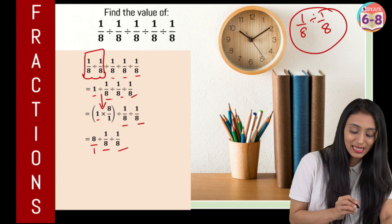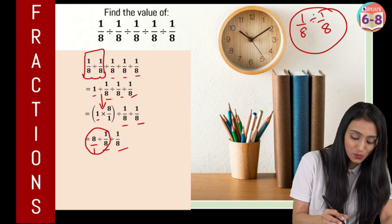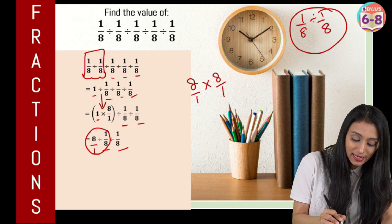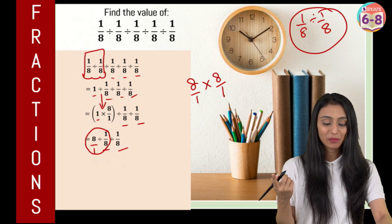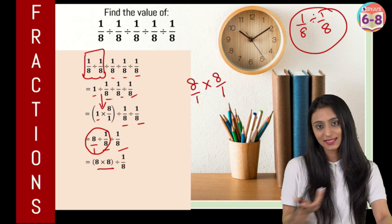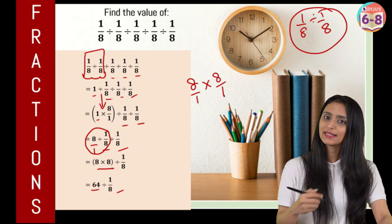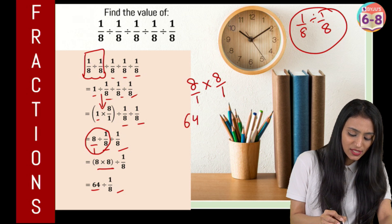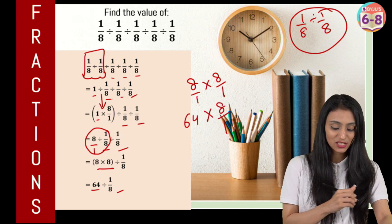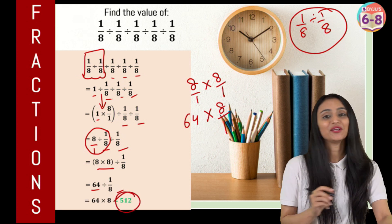Now this 8 is nothing but 8 upon 1. So similarly, I'm going to use the same thing here as well. Change this division symbol to multiplication and just flip this digit — 1/8 becomes 8/1. So 8 times 8, that's 64. Now we have 64 divided by 1/8. Same thing again: change the division symbol to multiplication and take the reciprocal — 8/1. This becomes 64 times 8, that's 512.